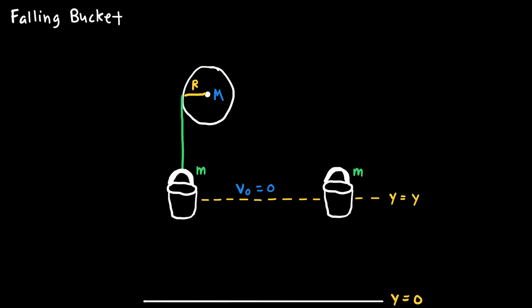On the left I have a bucket attached by a rope to a pulley. As the weight of that bucket pulls down on the rope, the rope will pull on the pulley causing it to rotate. On the right hand side I have a similar bucket that's going to be dropped from rest from the same height with the same mass, but it's just going to be in free fall.